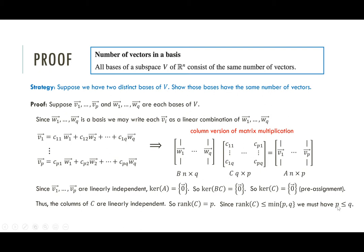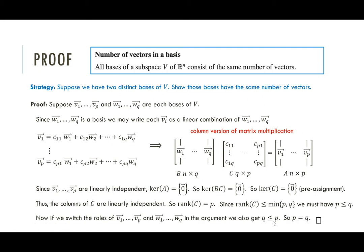All that work to get that P is less than or equal to Q. But notice: if we just switched the roles of V and W in this whole argument, we'd end up saying Q is also less than or equal to P. If P ≤ Q and Q ≤ P, then P and Q must be equal. So both bases have the same number of vectors.